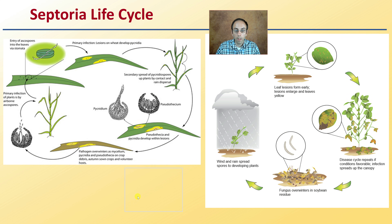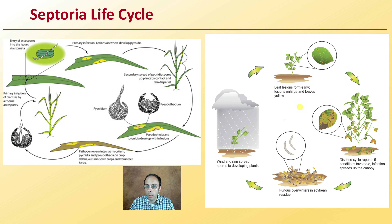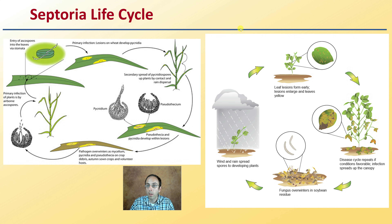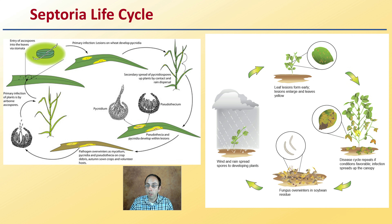Looking at the life cycle of septoria, you can see what's happening in those spots — all those little fungal spores developing. The pathogen can overwinter as mycelium and then reinfect plants the following year, so it's good to clean those areas up. Wind and rain splash can knock spores off, and they can develop as early lesions — yellow spots on newly emerged plants. The cycle can repeat itself if conditions are favorable.